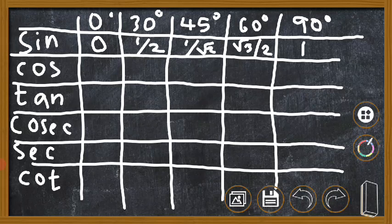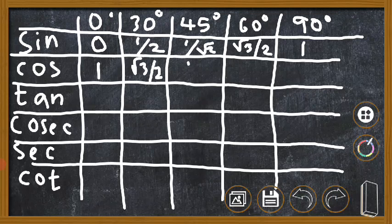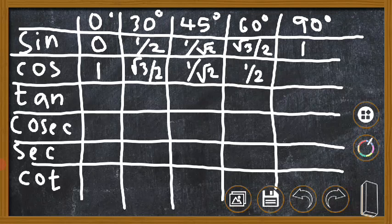How do you write the cos values? Just write them in the reverse order of the sin row. So cos 0 is 1, cos 30 is √3/2, cos 45 is 1/√2, cos 60 is 1/2, and cos 90 is 0. If you know the value of sin, you can easily write down the value of cos — just reverse the order.